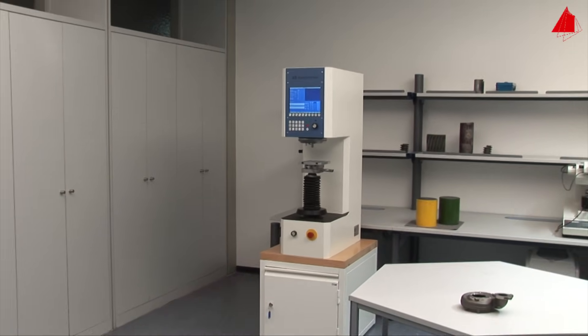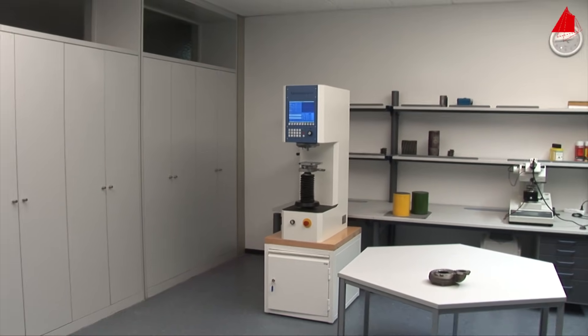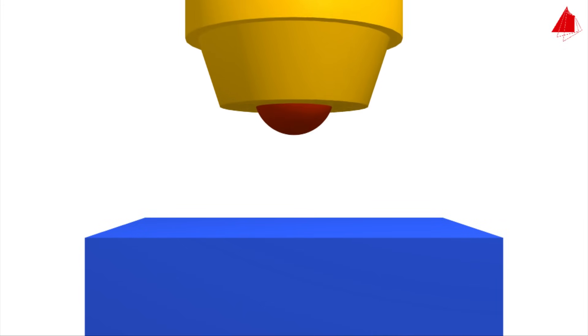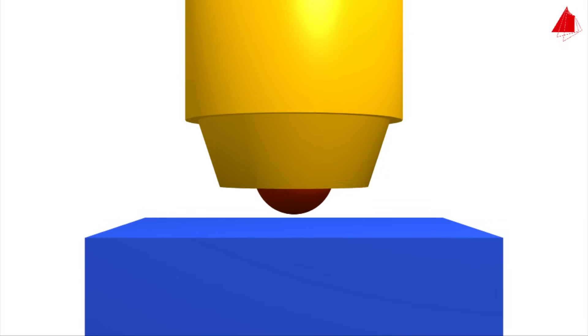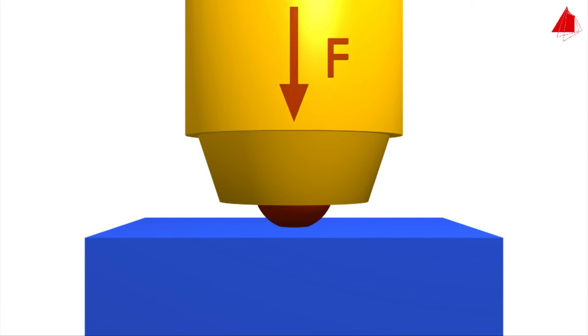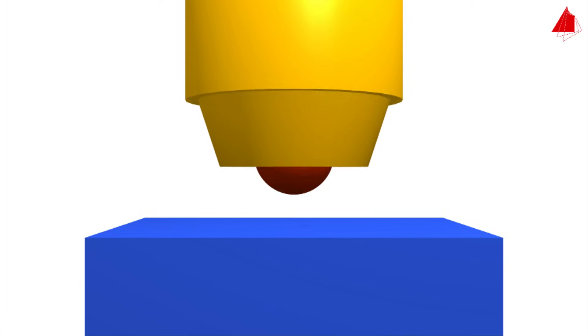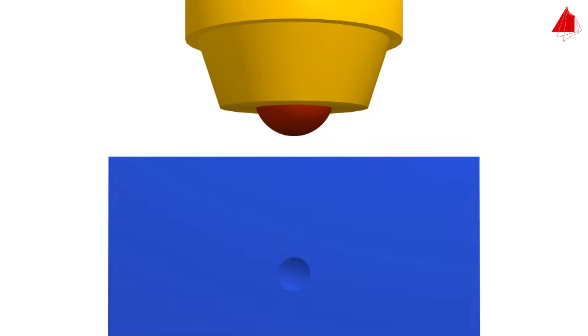After becoming familiar with the machine, let's start the experiment. The principle of the Brinell hardness test is to press a hard spherical indenter with an exactly defined force onto the test piece, then evaluate the surface area of the indentation.